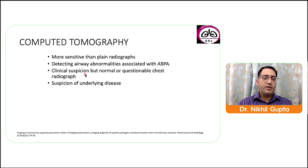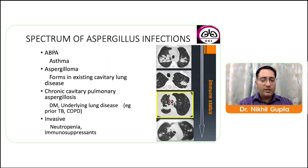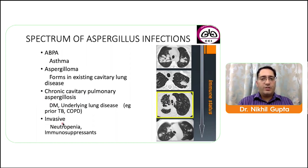MRI is superior to non-contrast CT in evaluating mediastinal masses and pleural abnormalities. Diffusion restriction in lymph nodes is a marker of disease activity; MRI is used for follow-up in young patients and as an alternative to CT in pregnant patients. The spectrum of aspergillus infections depends on immune status: immunocompetent patients may have ABPA or aspergilloma; immunocompromised patients generally develop chronic cavitary pulmonary aspergillosis or invasive aspergillosis.